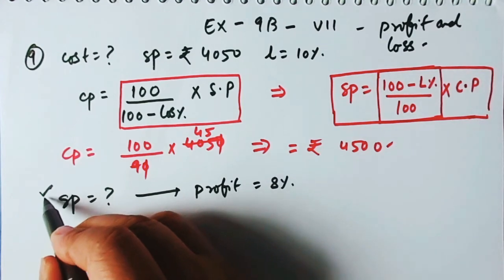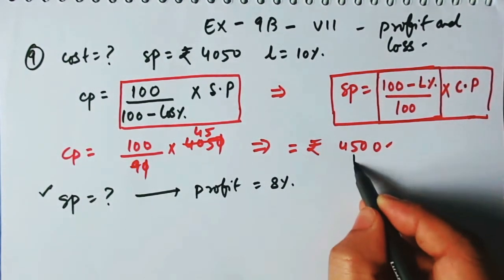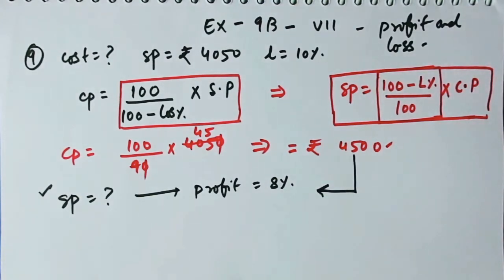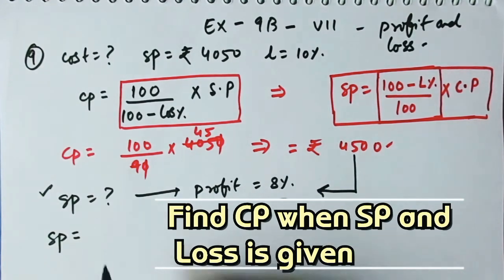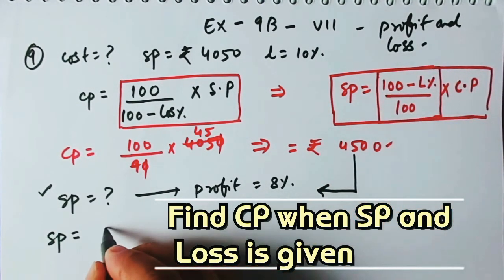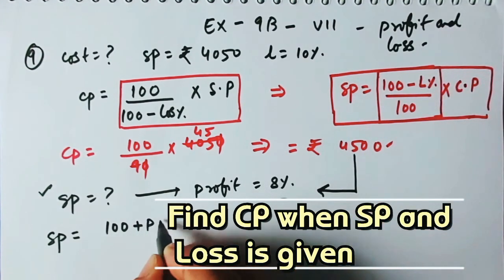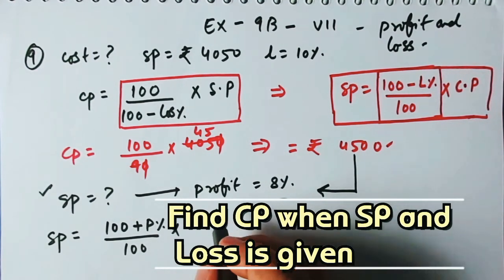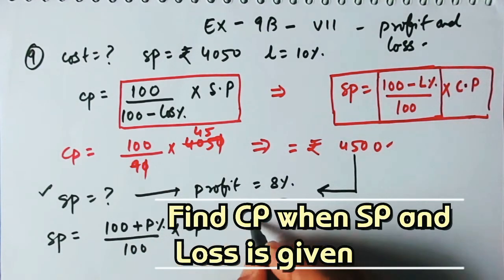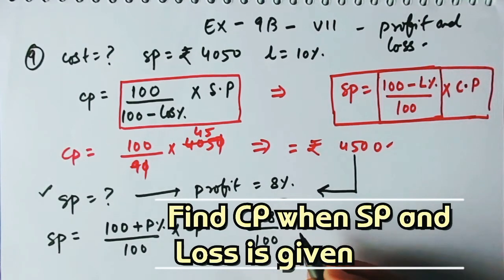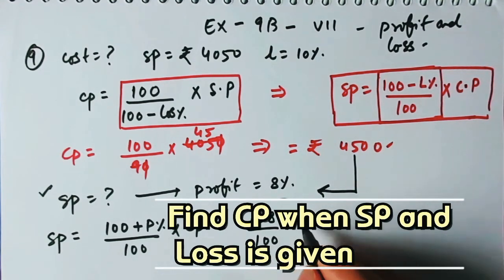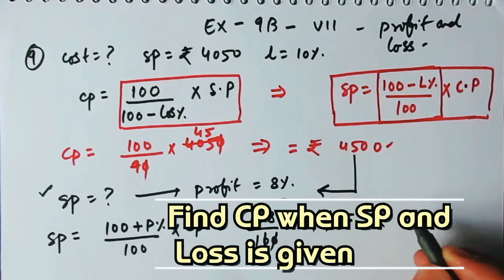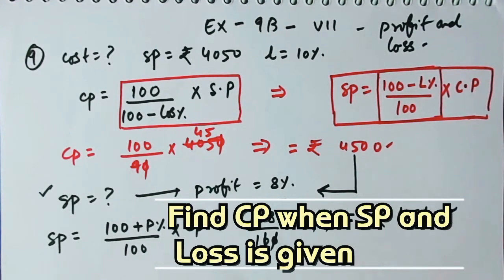We found the cost price as ₹4500. The formula for selling price at a profit is: SP = (100 + profit%)/100 × CP = 108/100 × 4500. Multiplying this out gives a new selling price of ₹4860.